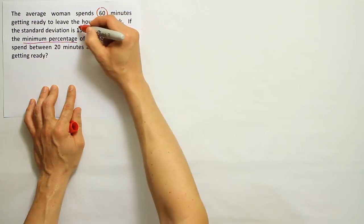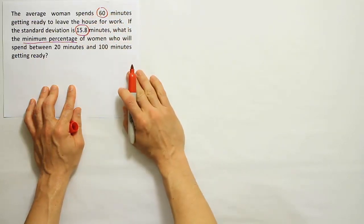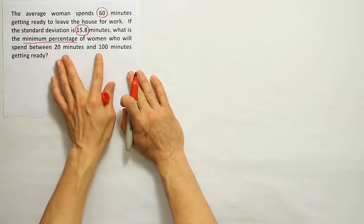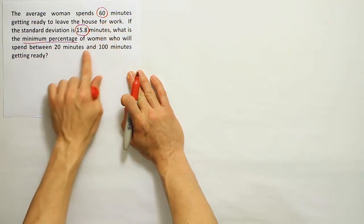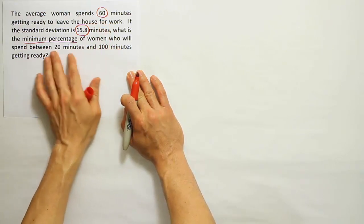Spend 60 minutes getting ready on average with a standard deviation of 15.8 minutes. They want to know what's the minimum percentage within this interval. Notice how the mean is inside the interval, and it's actually symmetric on both sides of that.